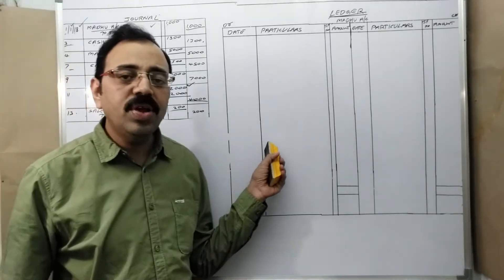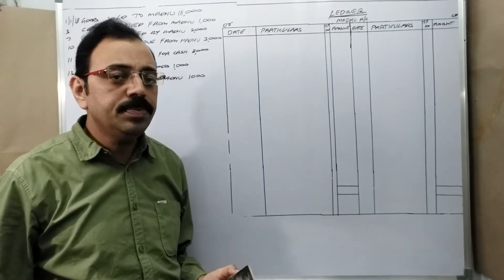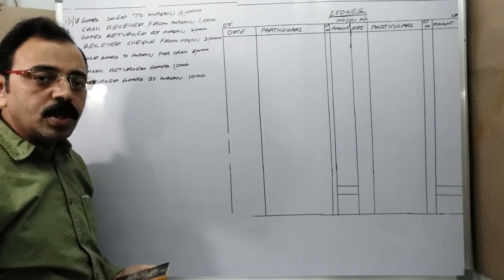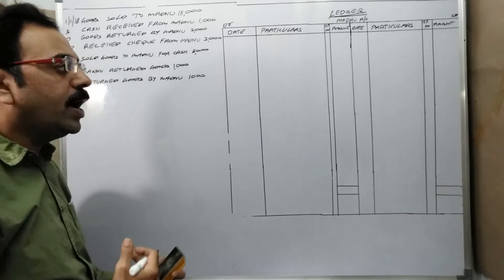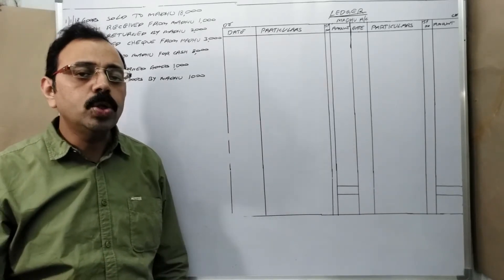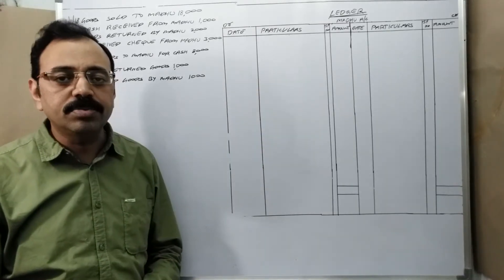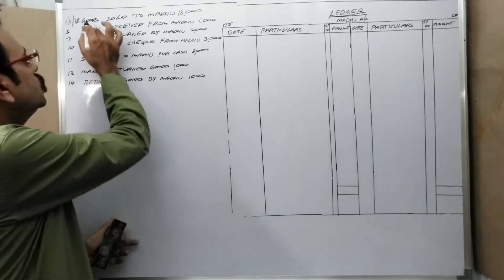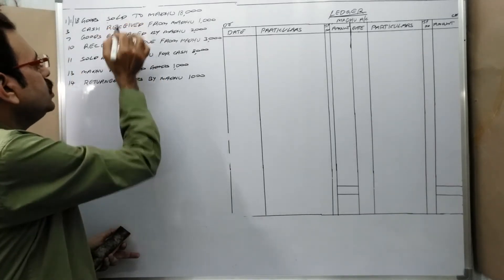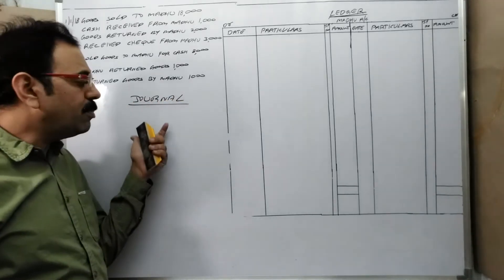In today's class we learn how to prepare one personal account. See this example. There are some transactions for the month of January, all between the firm and Madhu. Finally on 31st January 2018, the firm wants to know how much Madhu is liable for. We should post all these transactions in the ledger. First one - goods sold to Madhu. In the journal book we should first write the journal entry, so you should know some basics regarding journal entries.